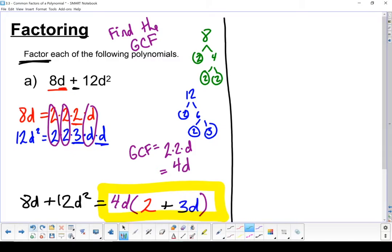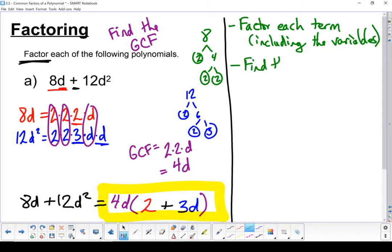Let's write down the steps that we used. Our first step, we factored each term, including the variables. Next step, we found the greatest common factor. Our last step is we rewrote it in factored form with the GCF on the outside and inside in brackets all the parts that were left.